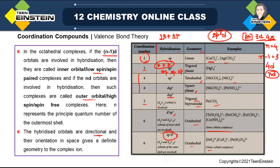The hybrid orbitals have a directional nature — this directional nature cannot be explained by Werner's theory, but now we can. Their orientation in space gives a definite geometry to the complex. That is why there is a separate column for geometry. The geometry depends on the type of hybridization. Hybrid orbitals are never pure s, p, or d — they are always hybrid and thus have directional nature, giving a definite geometry.